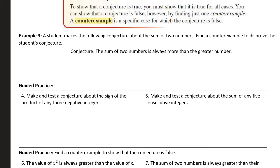So this conjecture is the sum of two numbers is always more than the greater number. So that would be saying like 7 plus 9 is greater than 9. That's true. Now we've got to find a case that proves that false. If I add together two numbers, there's a possibility that one of those numbers is negative. So if I add together negative 7 plus 9, is that greater than 9?